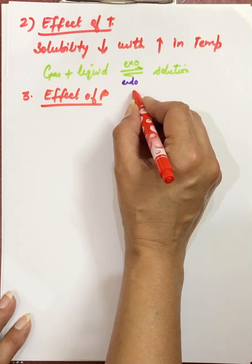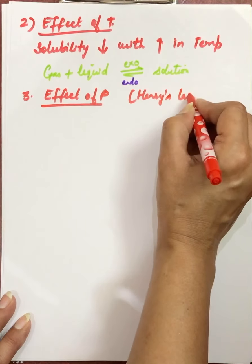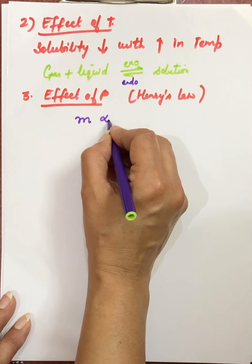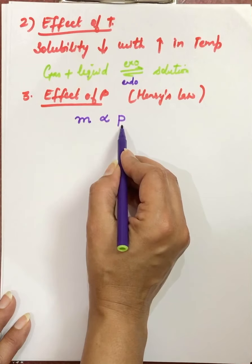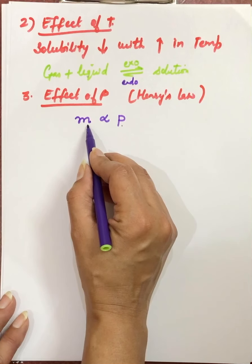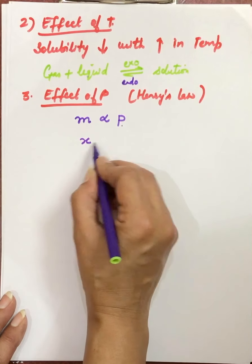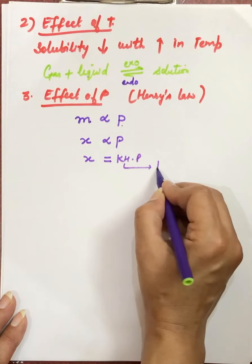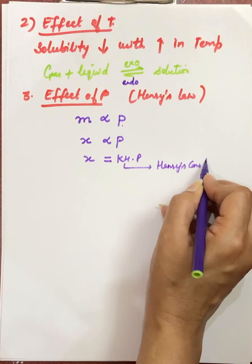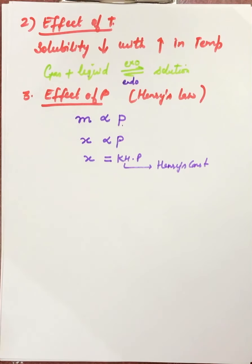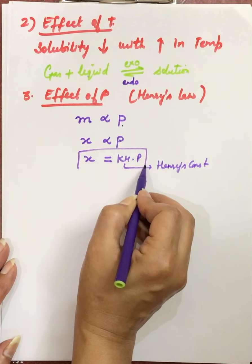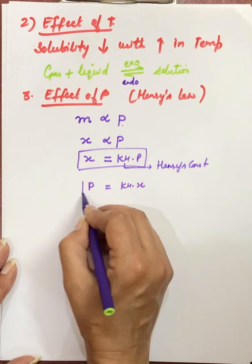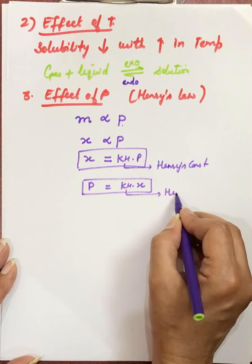The next factor is effect of pressure, studied through Henry's Law. According to Henry's Law, the mass of gas dissolved in a liquid is proportional to the pressure applied on the gas — more pressure means more solubility. More accurately, we use mole fraction (X) in place of mass. Removing the proportionality sign gives a constant KH, called Henry's constant. The formula can be written as X = KH × P or P = KH × X; these two forms differ in the units of KH.